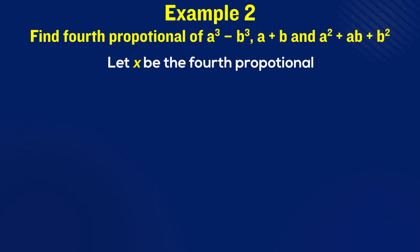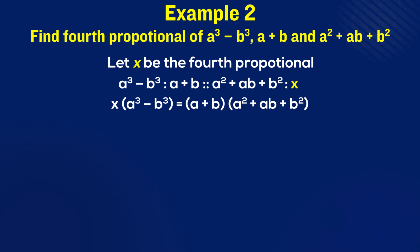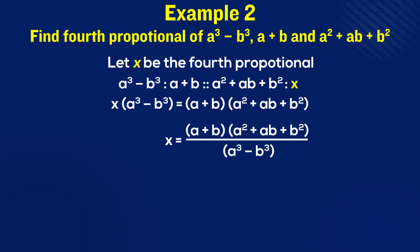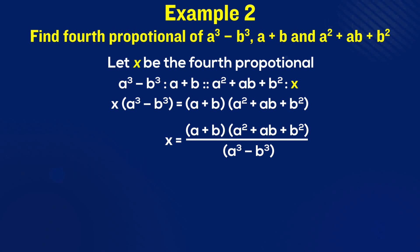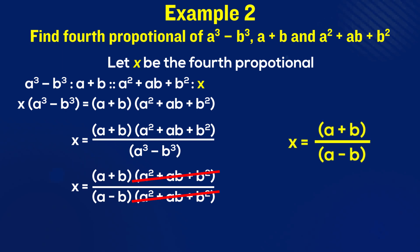Then write these four quantities in proportion like this. Remember the magic formula: product of extremes equals the product of means. Use that to equate the product of the extremes and the means like this. Once done, it's time to isolate x by shifting a cubed minus b cubed to the right side. Now all you need is to simplify this. Start by applying this identity that you see on your screen; following that, our denominator a cubed minus b cubed will now become a product of these two terms. So satisfying! And so we have x equals a plus b upon a minus b — simplified enough to be declared as the required fourth proportional.